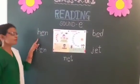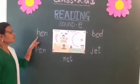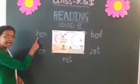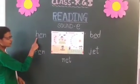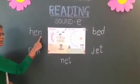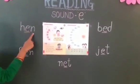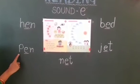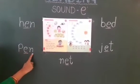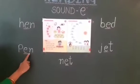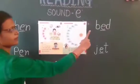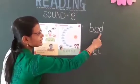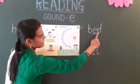First of all, we read words — E sound words. Put your finger on H. H-E-N. H-E-N, hen. Our next word is P-E-N. P-E-N, pen. B-E-D. B-E-D, bed.